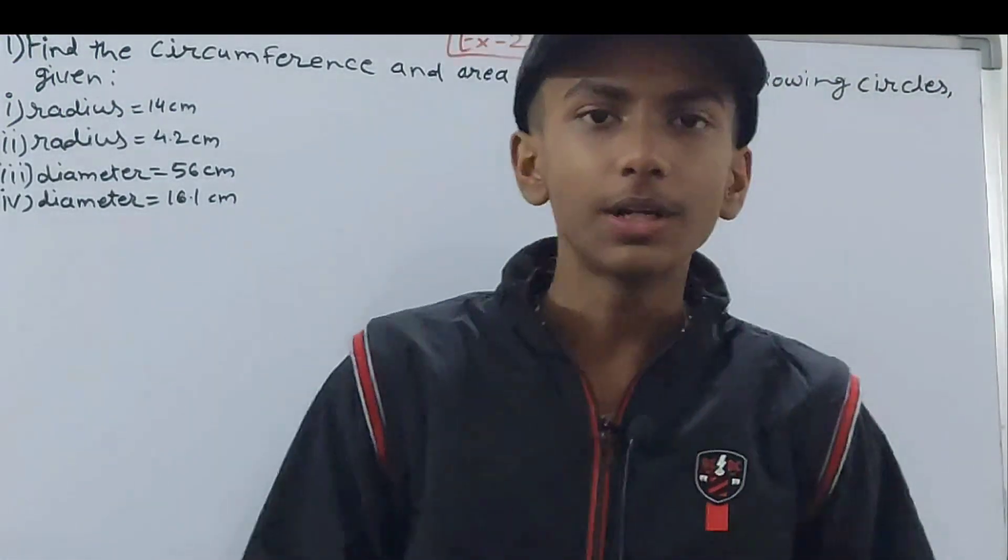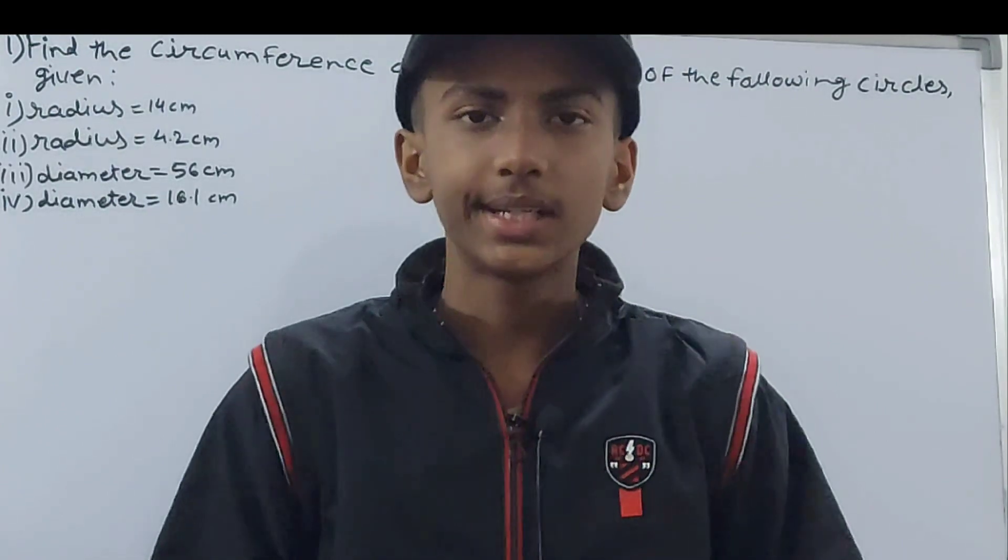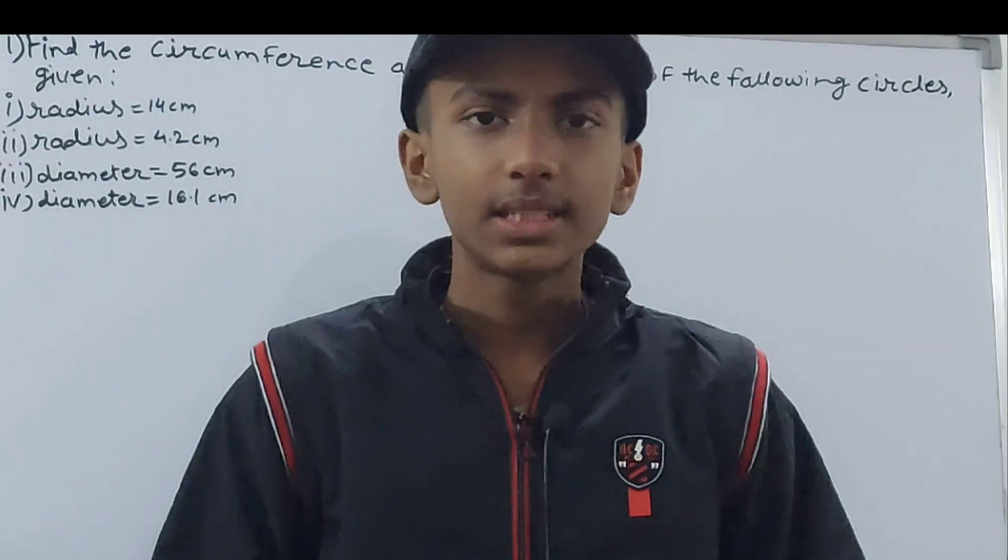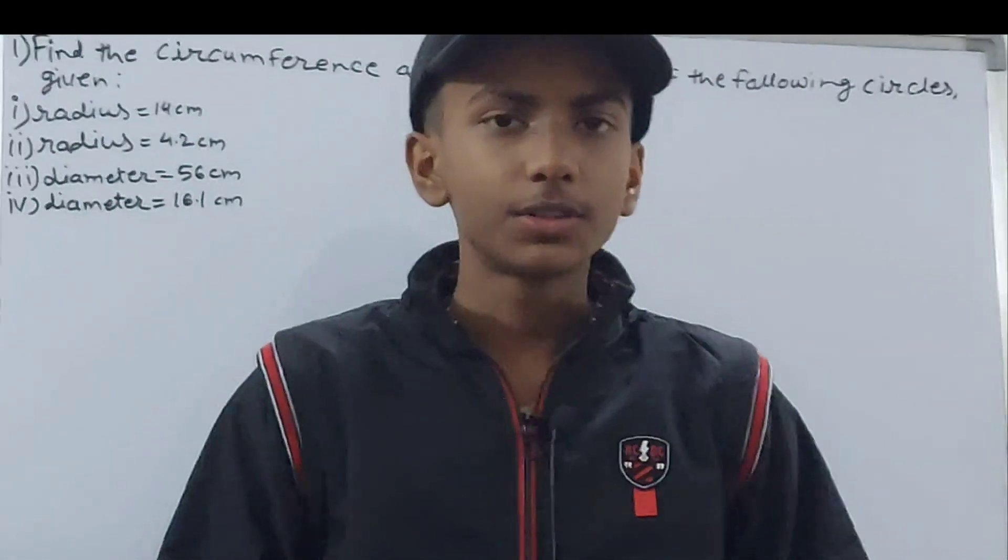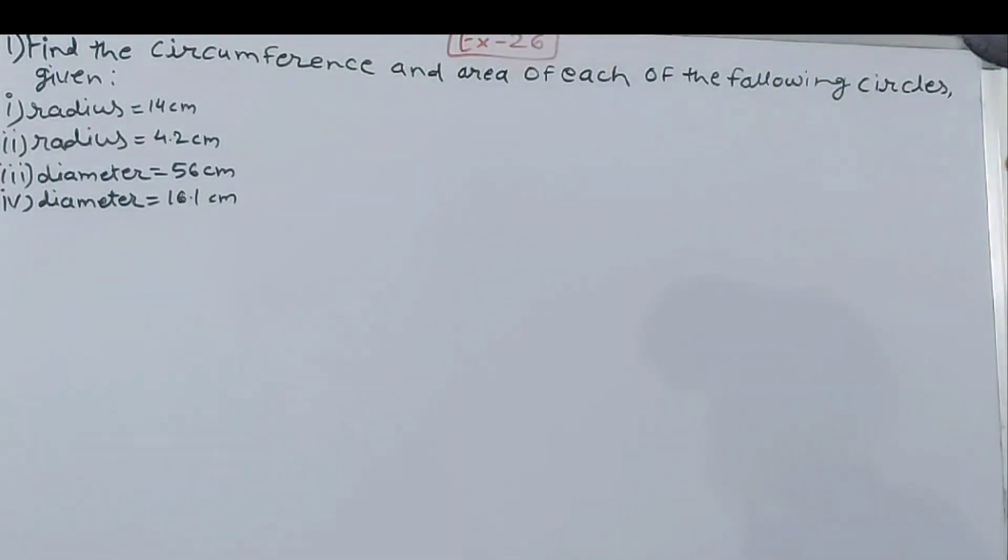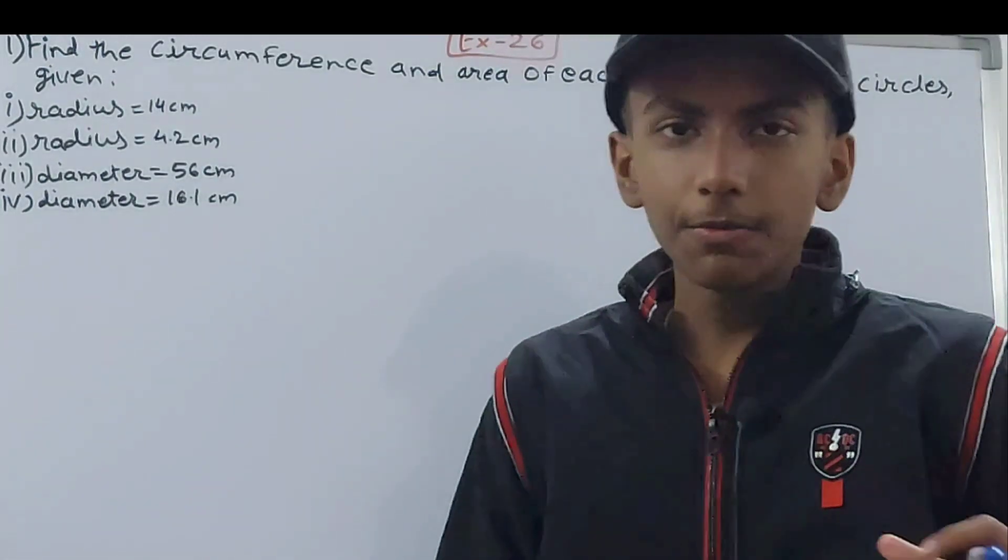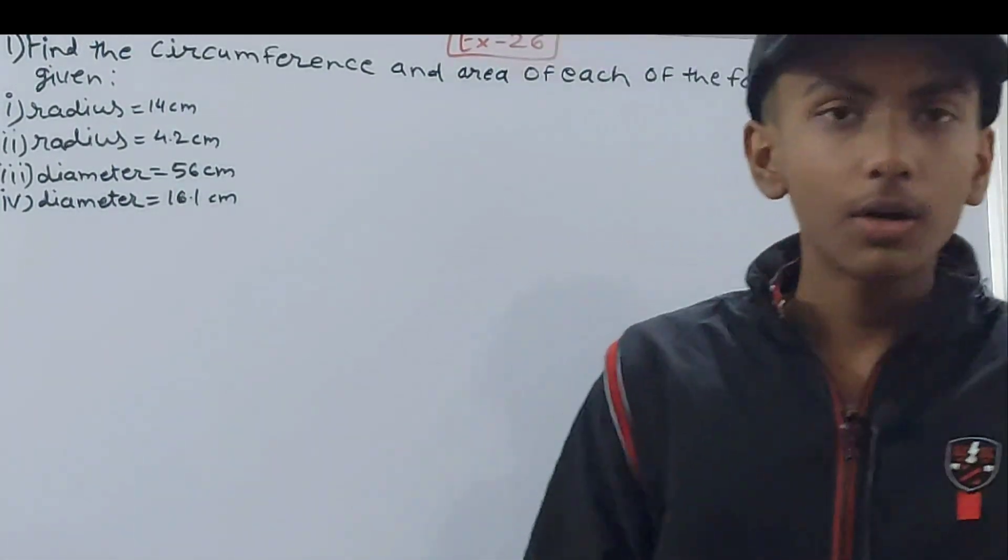Hello friends, welcome back to my YouTube channel, Unlock a Learning. In this video we are going to solve ICSE Mathematics Class 8, Chapter 26, Circumference and Area of a Circle, Exercise 26, Question Number 1. We need to find the circumference and area of the following circles given.